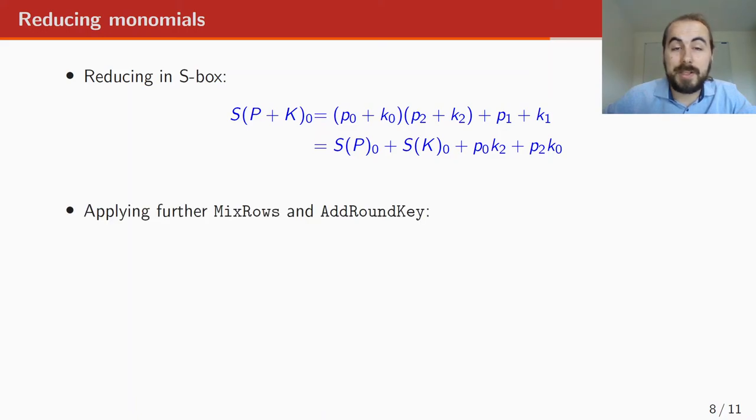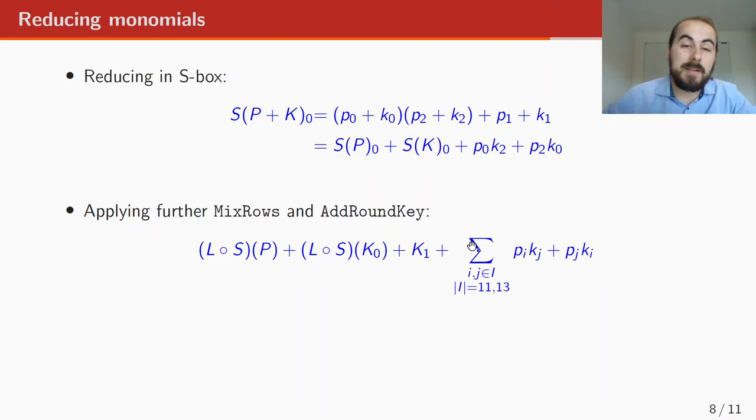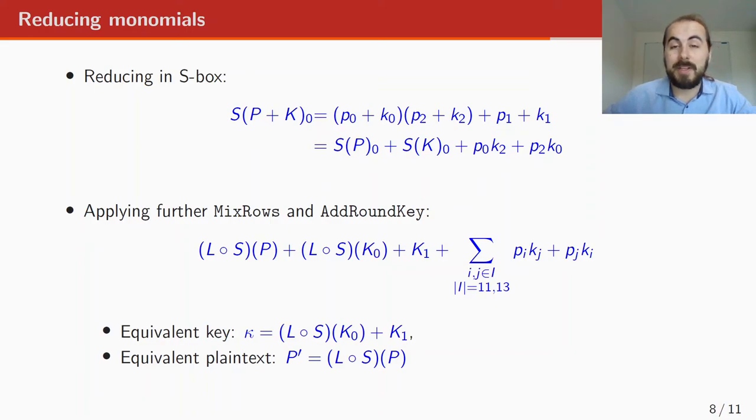So if we also apply the MixRows and the add round key layer, then we get this equation. So we added the linear layer to these first parts, and we apply the linear layer to this last part, which consists of all mixed terms, and then we add the new round key. So now, if we take this part as a new variable, and this part as new variables, we get equivalent keys, and equivalent plaintext, and we reduce the number of monomials by quite a big amount. And of course, since these are bijective, you can always go back to the result you needed afterwards. But it's still too many monomials.